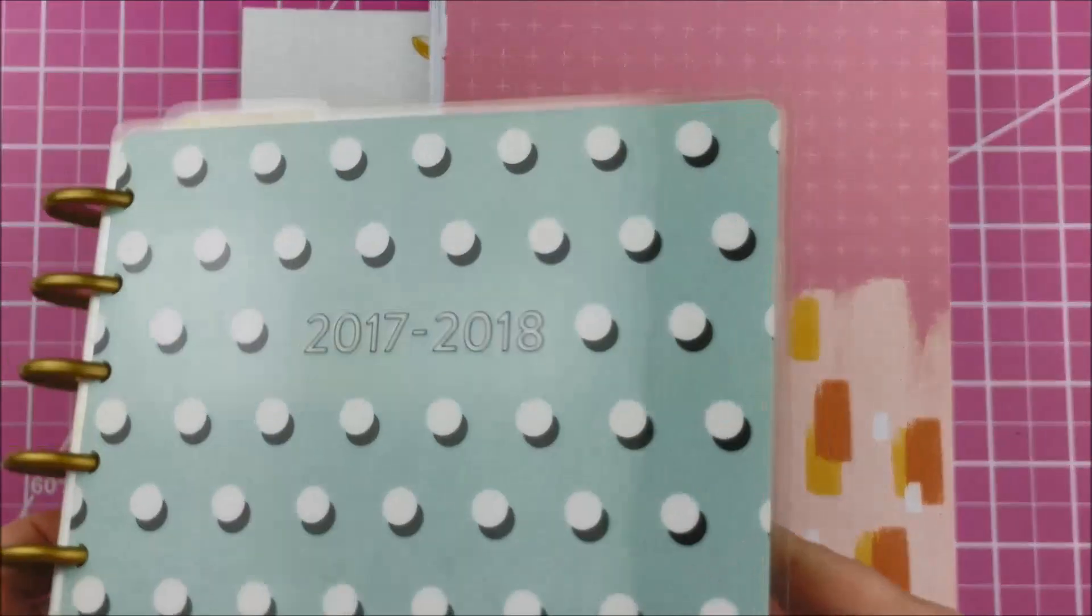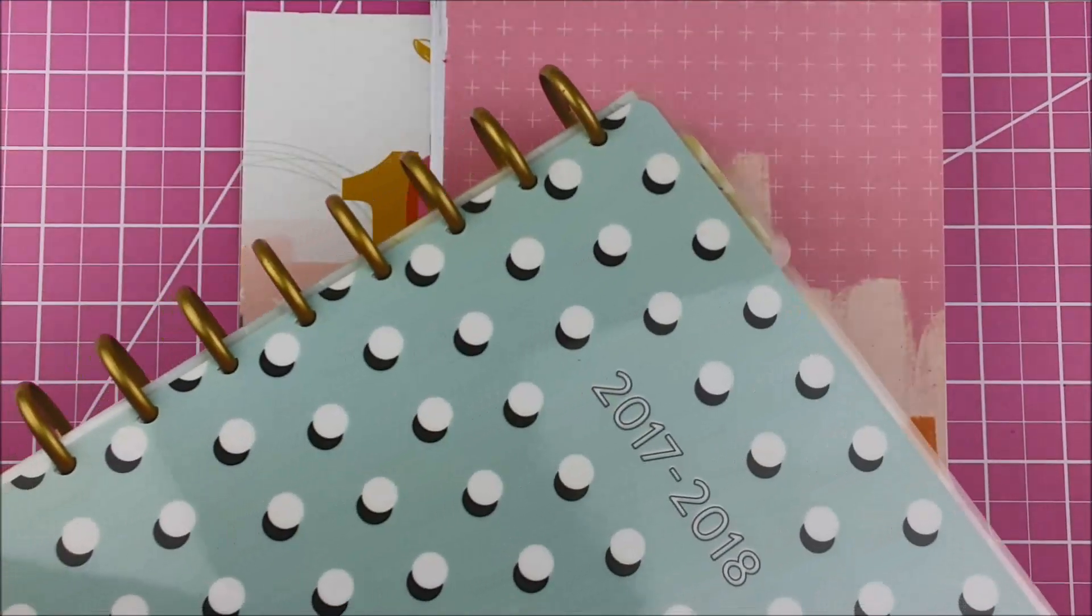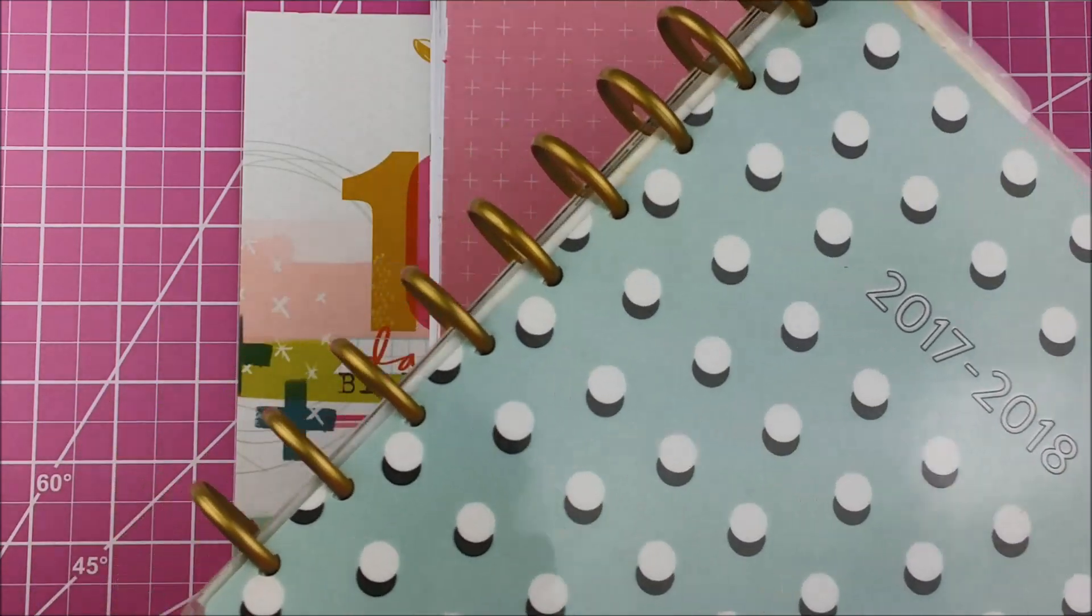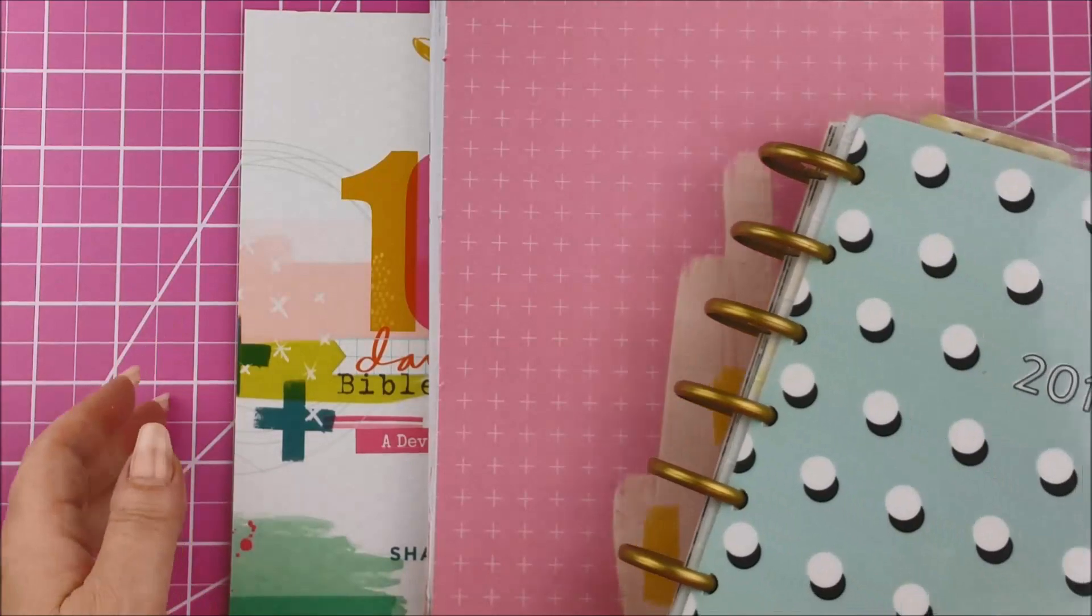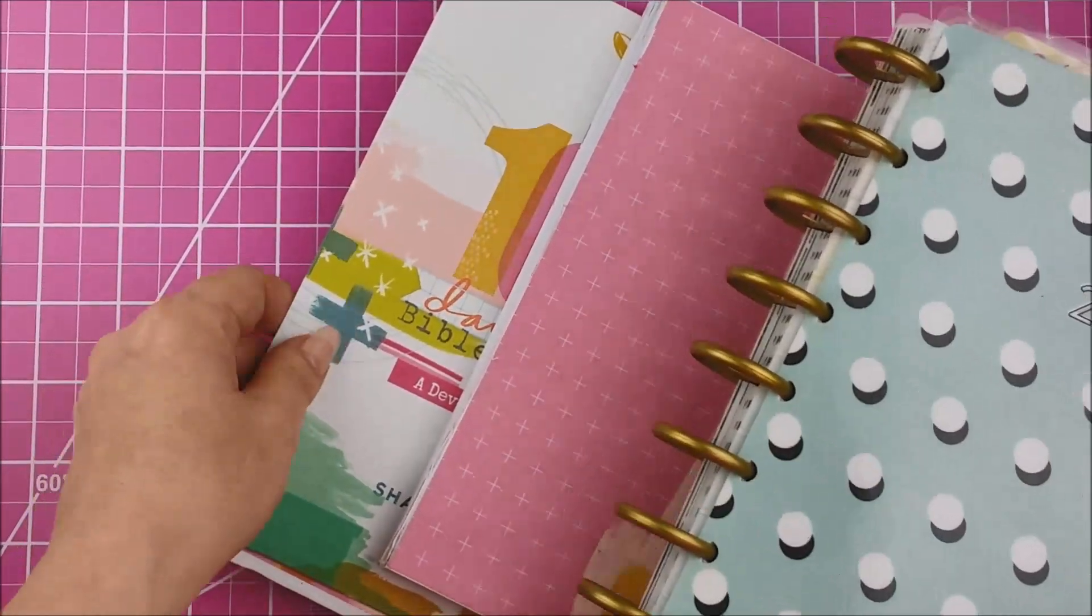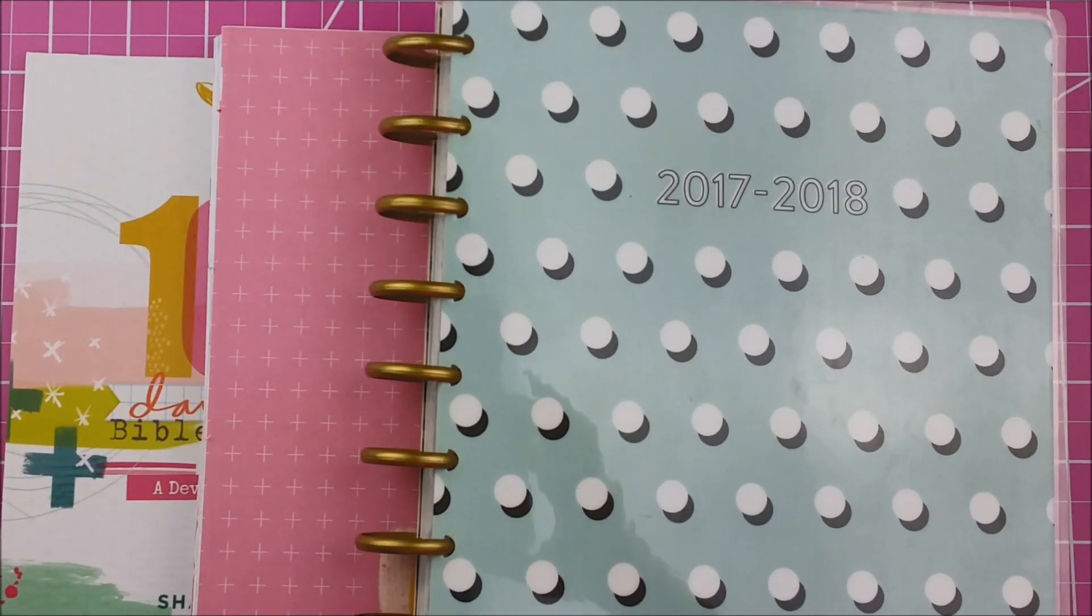So, now what I'm going to do is I want to put the discs on. So, I have this old Happy Planner from last year, and I'm just going to steal the discs right off of here for now. But then I think I'm going to doll it up. I think I'll get some new discs. But in the meantime, let's just get it bound so we've got it ready to go. And let me zoom out here so you can get a better view.